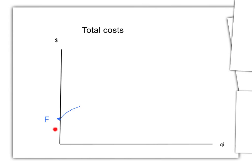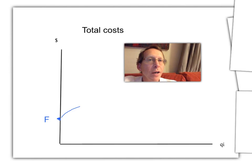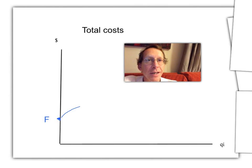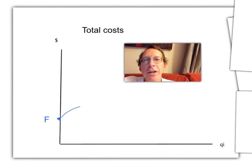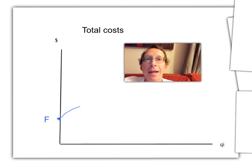Why could it have that shape? One reason why the total cost curve may increase at a decreasing rate at low levels of output is because if you're only producing a small level of output, then you can't use your inputs very efficiently. For example, imagine you were trying to run a car plant with perhaps two people. They'd be running back and forth along the production line trying to do the various jobs. As you start to increase production and employ more people, you can actually do things more efficiently. Whilst your total cost increases, it actually increases at a decreasing rate.